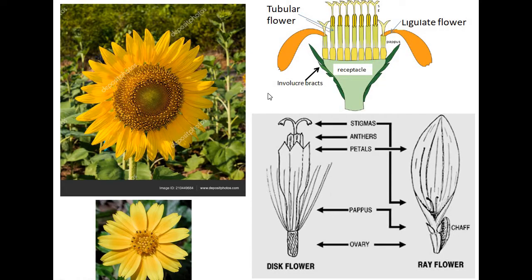Before we start, we need to understand some basic terminology about the family. Consider the sunflower: the outer flower is called the ray floret, also called ligulate flower, and the central flower is called the disc floret, also called the tubular flower. The thalamus structure is called the receptacle, and the series of bracts is called the involucral bracts. The ray floret is a unisexual flower — only the female flower is present and stamens are absent. The disc floret is a bisexual flower.